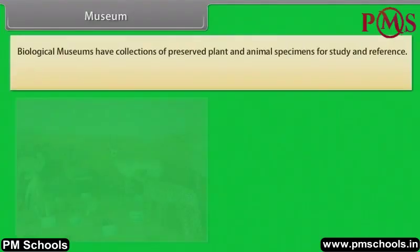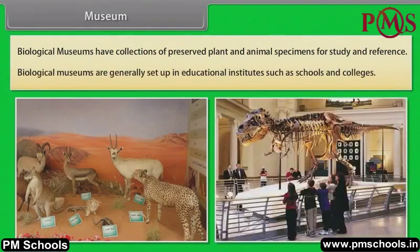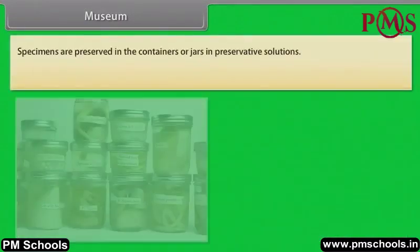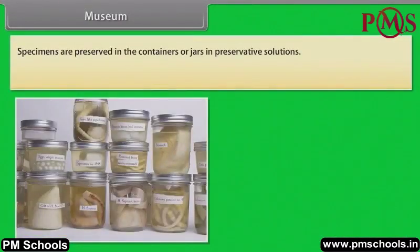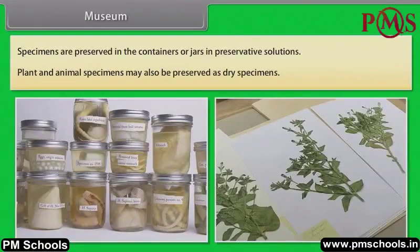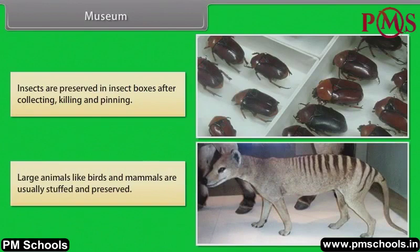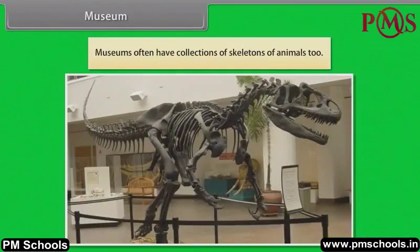Biological museums have collections of preserved plant and animal specimens for study and reference. Biological museums are generally set up in educational institutes such as schools and colleges. Specimens are preserved in containers or jars in preservative solutions. Plant and animal specimens may also be preserved as dry specimens. Insects are preserved in insect boxes after collecting, killing and pinning. Large animals like birds and mammals are usually stuffed and preserved. Museums often have collections of skeletons of animals too.